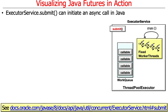Here's a simple example that we're going to visualize. This is the submit method on the executor service — more specifically the abstract executor service, but you can think of it like submit on executor service — which can initiate an asynchronous call on Java.